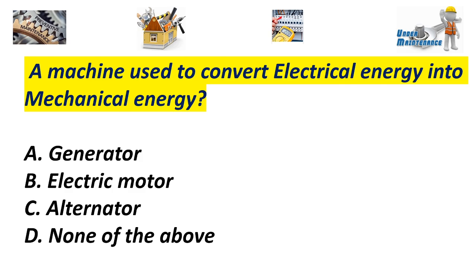A machine used to convert electrical energy into mechanical energy. A. Generator. B. Electric motor. C. Alternator. D. None of the above. Answer B. Electric motor.